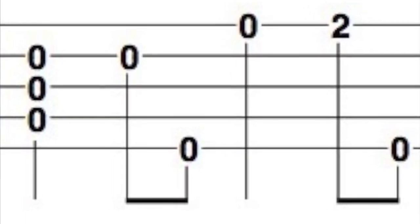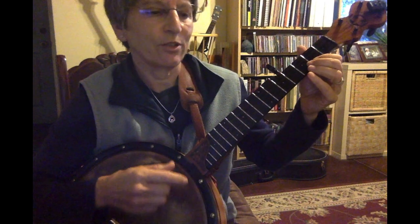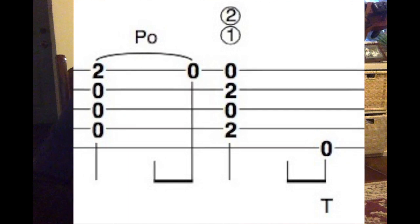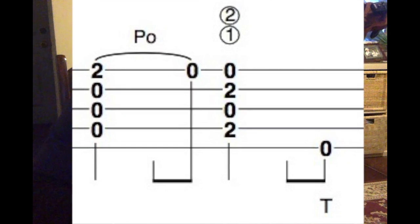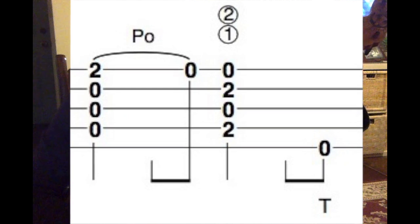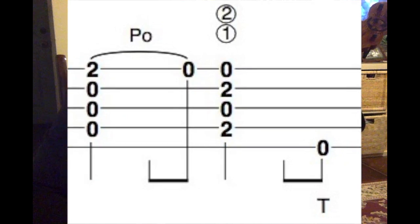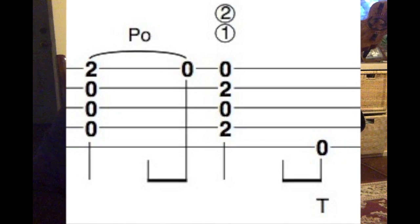Using your second fret there, and then a full D chord, and a pull-off. Then an A7 chord, which is your index finger on the fourth string, second fret, and your second finger on the second string, second fret.